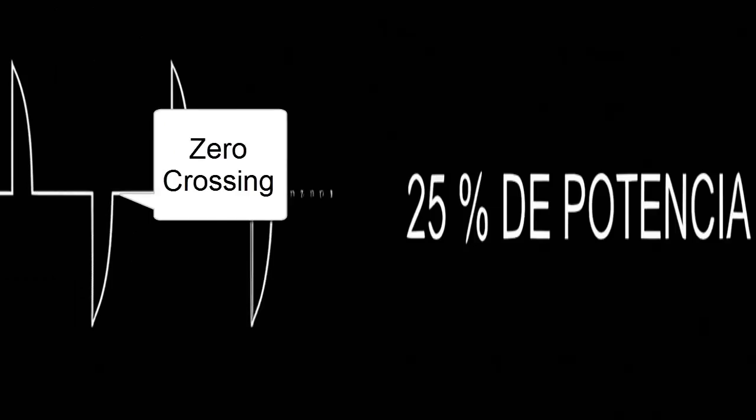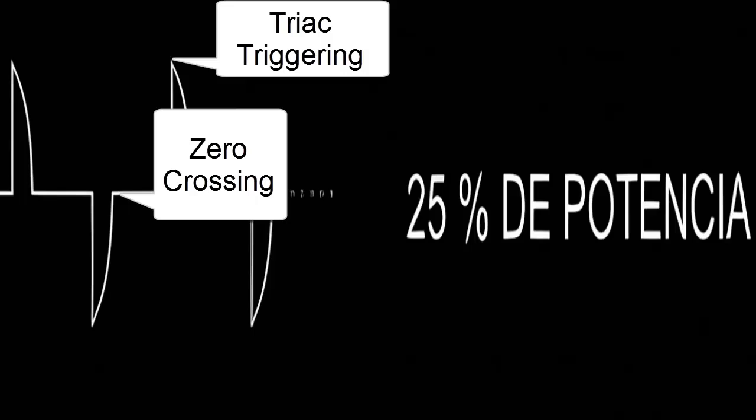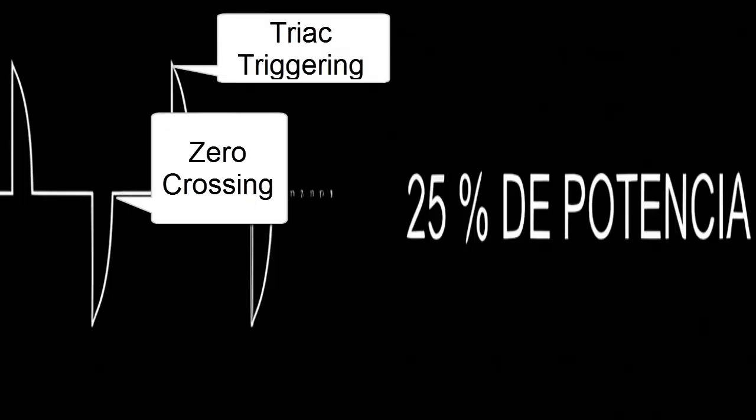In the graph, we observe the moment when the triac fires, corresponding to a fan speed required by the user of 50%.